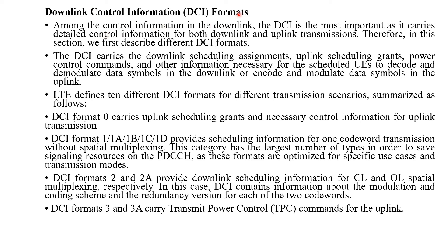The predetermined format of PCFICH allows each user equipment to decode the CFI without any ambiguity and thus determine the number of OFDM symbols at the beginning of each subframe used as a control region. Among the control information in the downlink, the DCI is the most important and carries detailed control information for both downlink and uplink transmission. LTE defines 10 different DCI formats for different transmission scenarios.